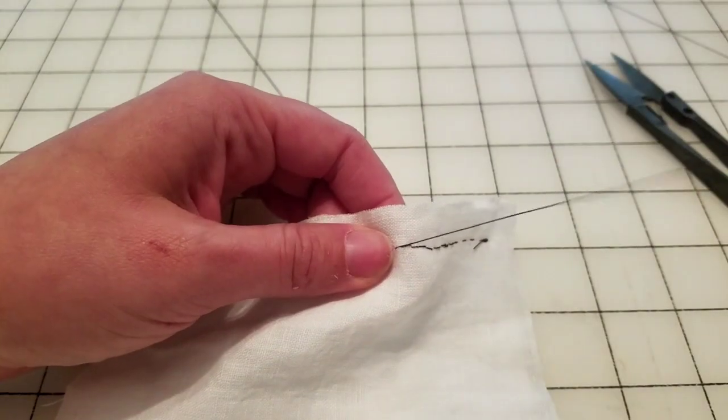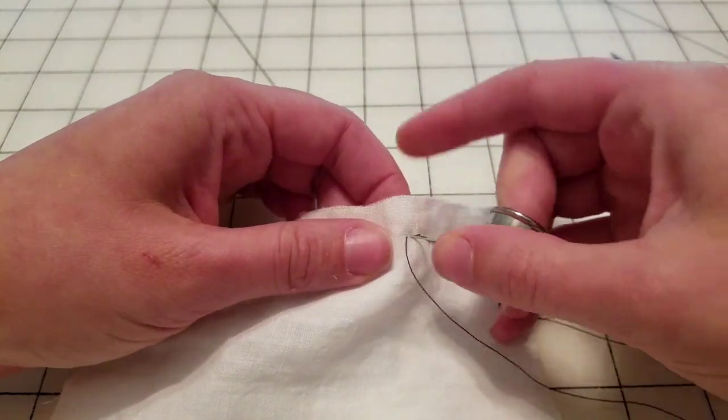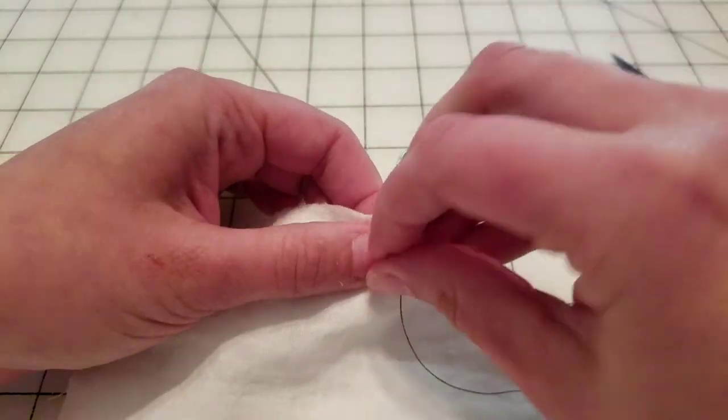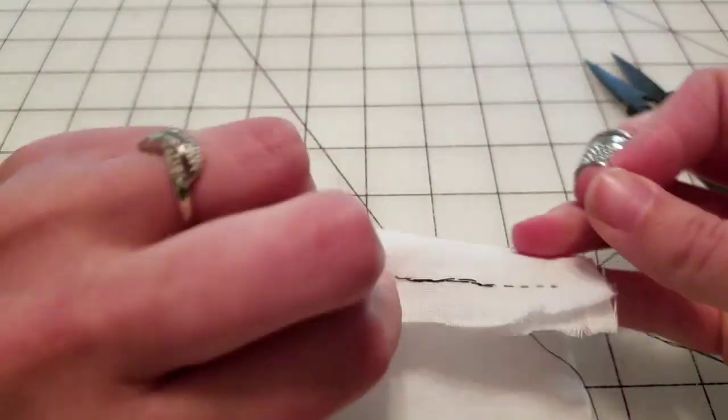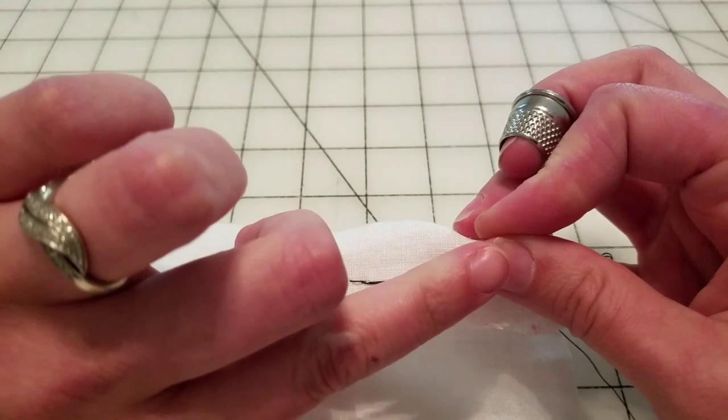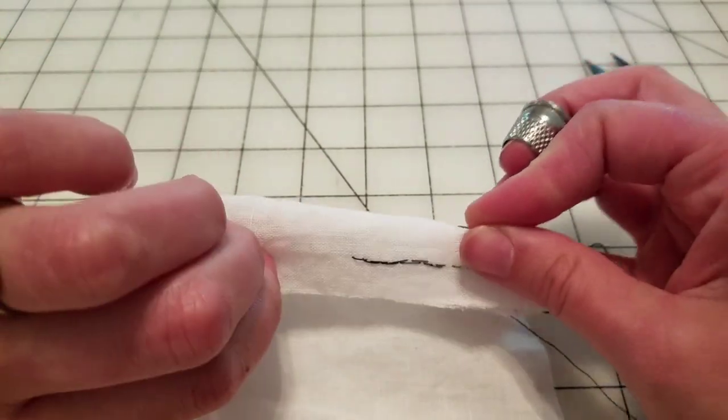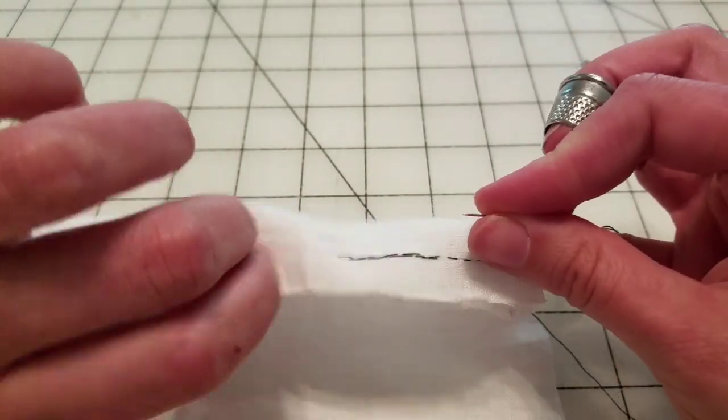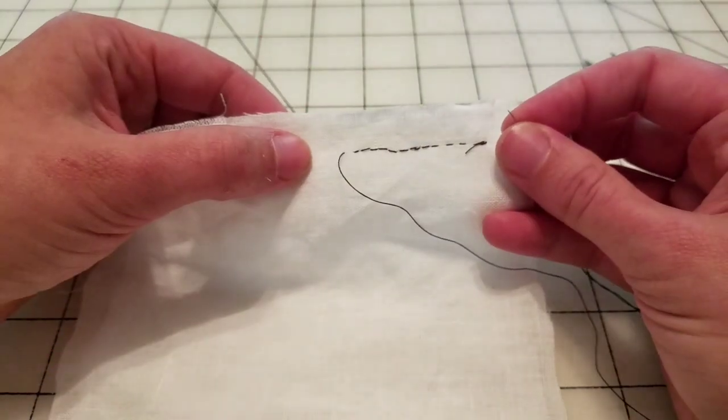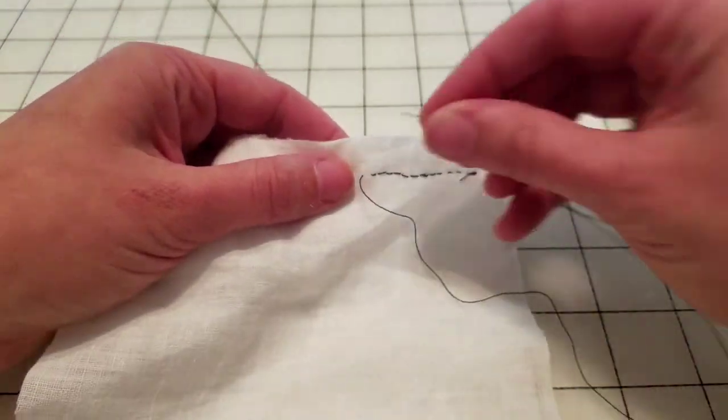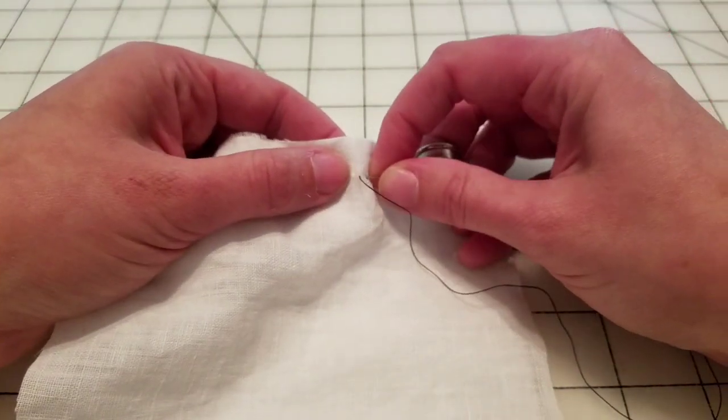Now the back side of a backstitch looks a little different. You can see, mine's a little sloppy, but you can see how that would be a lot stronger than just machine stitching with the two threads run together.